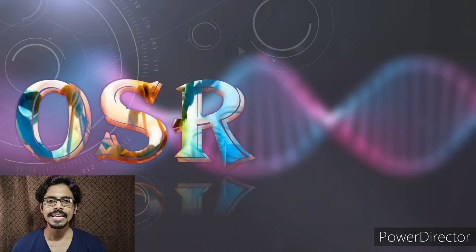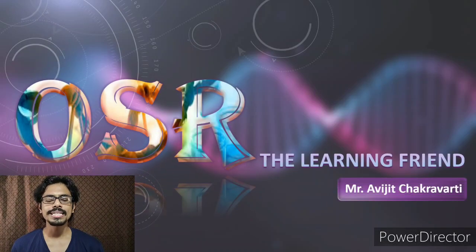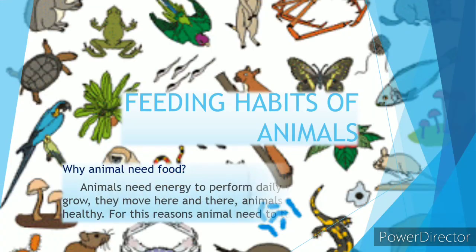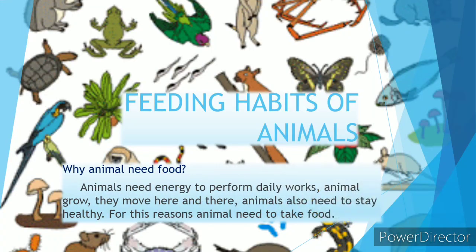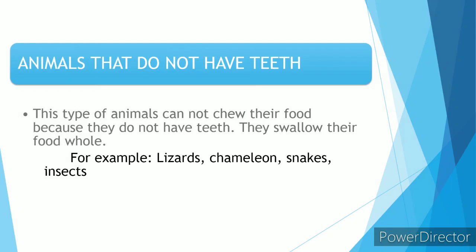Hello students, this is Avijit sir and welcome to another class. We have learned so much about animals who have teeth — they can chew their food very well, they can tear, and do lots of things with their teeth. But there are some animals like lizard, chameleon, snakes, and insects who do not have any teeth for chewing.